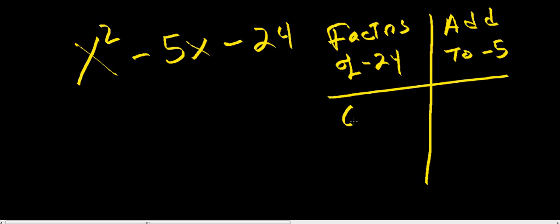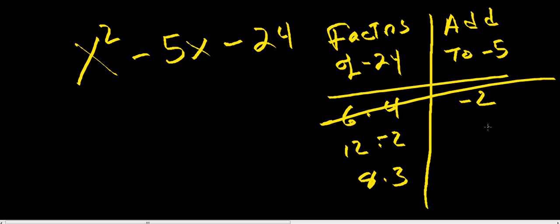6 times 4, 12 times 2, 8 times 3. If you got -6 plus 4, that's going to be -2, so that's not it. 12 plus -2, that's 10, that's not it. Let's look at our 8. You've got -8 plus 3, that's -5, right? So that's what we're looking for.